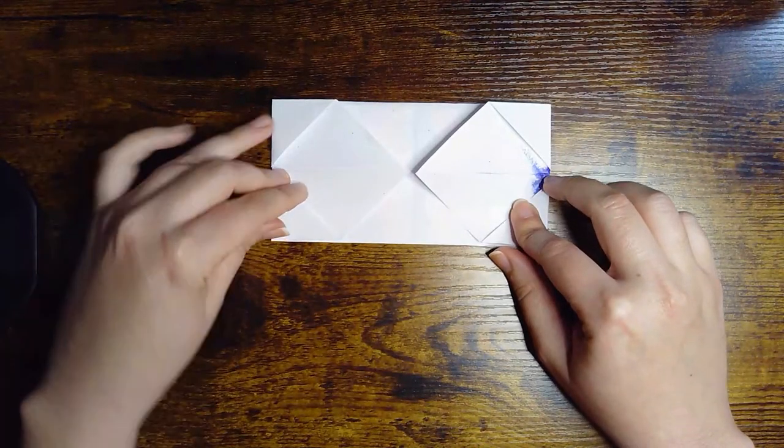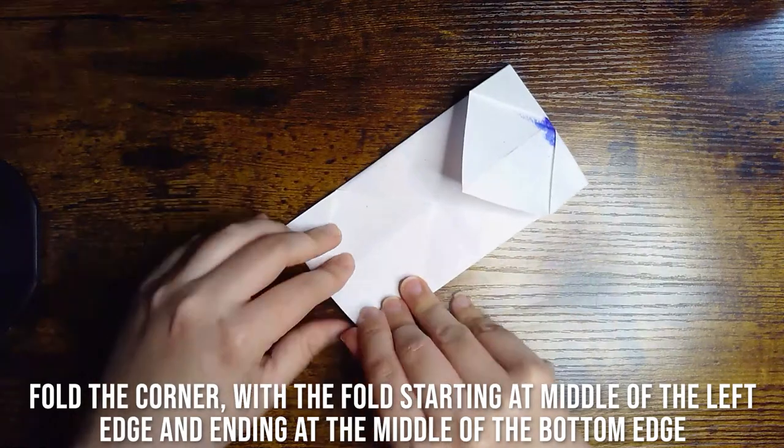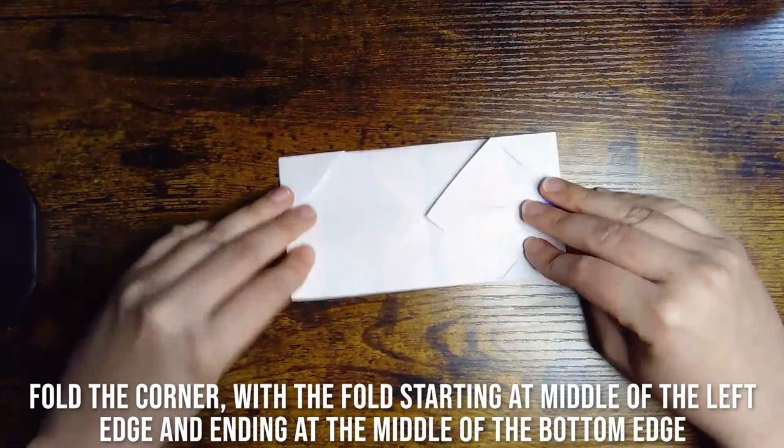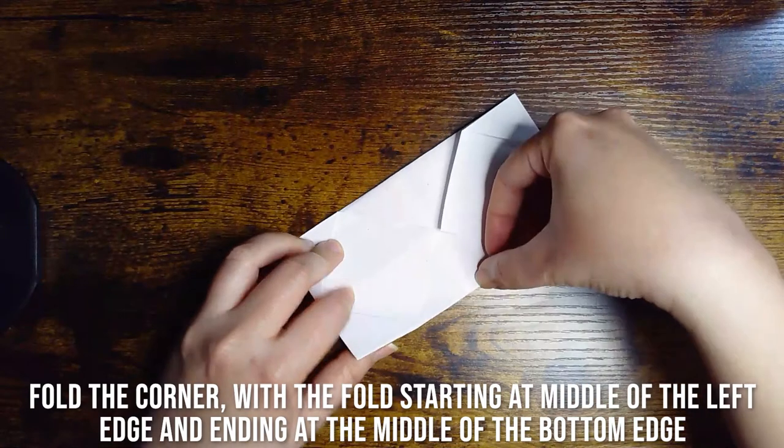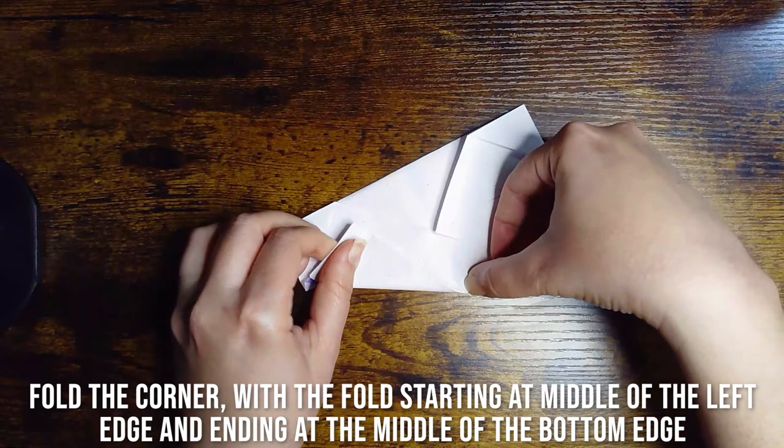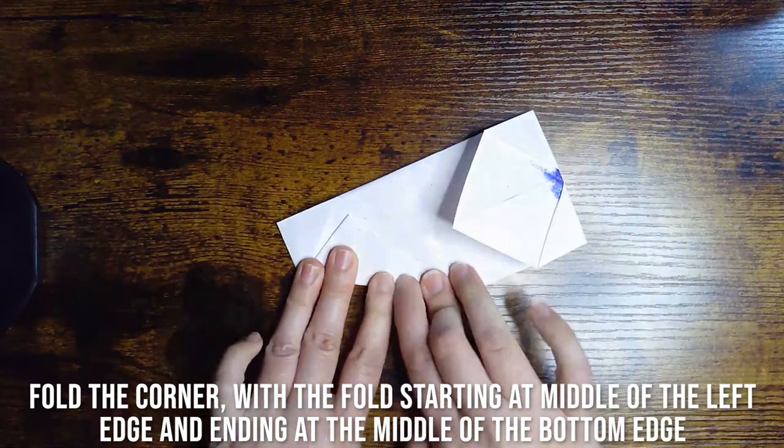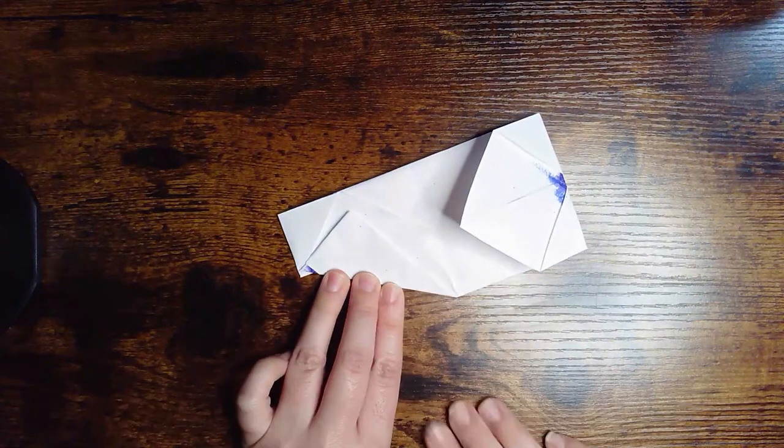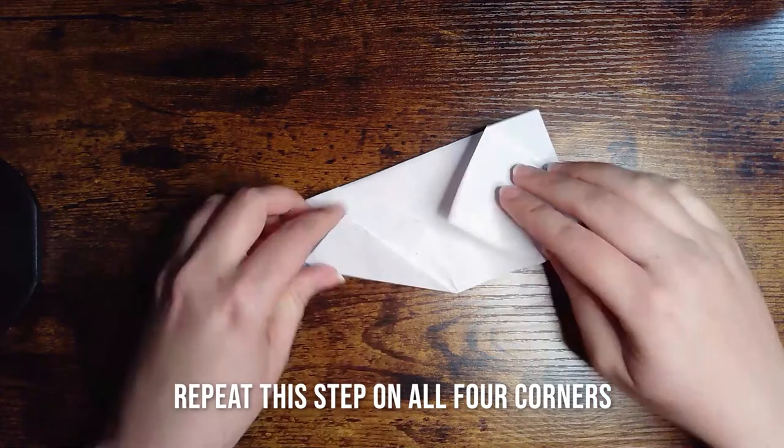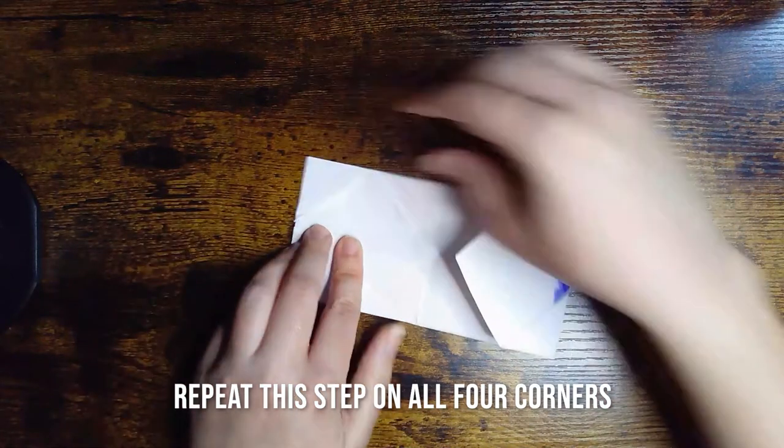This next step gets a little bit tricky. You're going to fold the corners up, and your fold should start and end at the middle of the left edge and the middle of the bottom edge. You can see how that goes at kind of a funny angle there. You're going to repeat this step on all four corners.